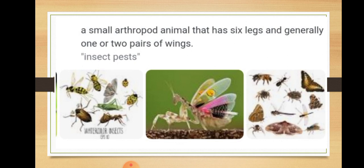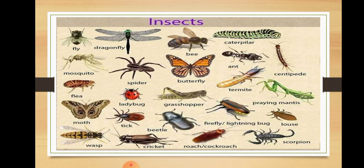What is an insect? An insect is a small arthropod animal that has 6 legs, which means they have 3 pairs of legs, and generally has 1 or 2 pairs of wings. Here are some pictures and images of some of the insects.